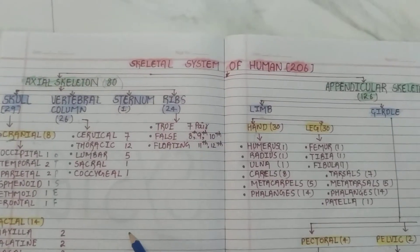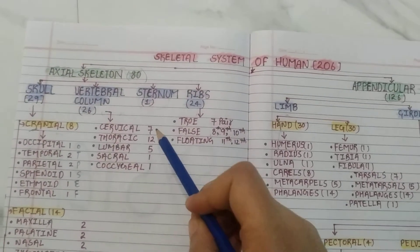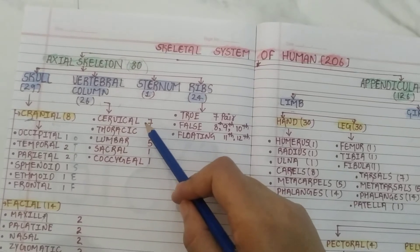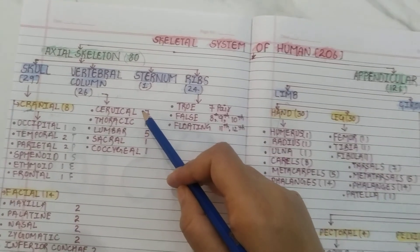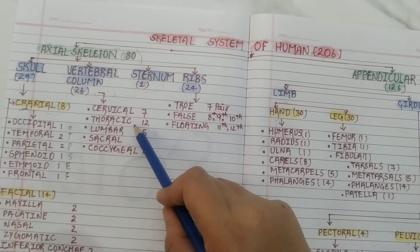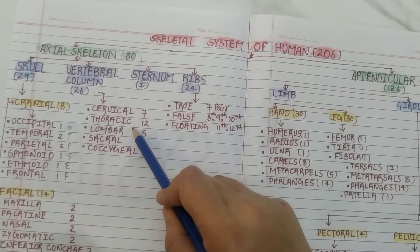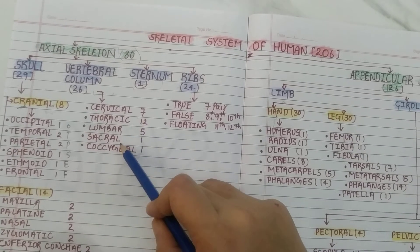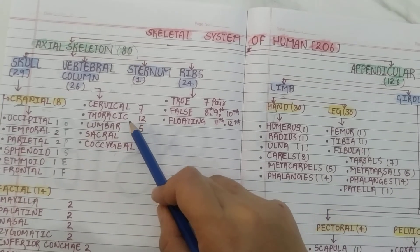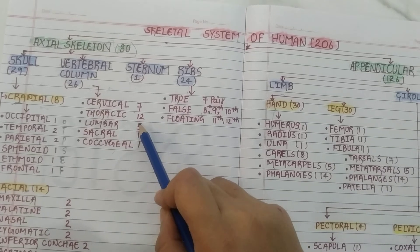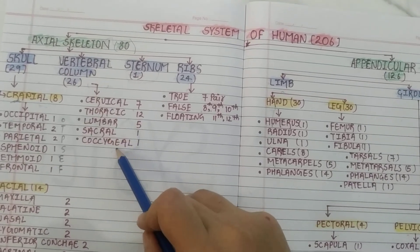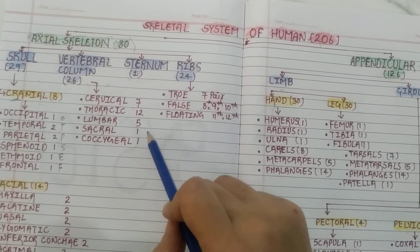Now the vertebral column has 26 bones. Originally there are 33 bones, but after the fusion of the sacrum and coccyx, there are 26 bones. The regions are: cervical (7), thoracic (12), lumbar (5), and the sacrum and coccyx together count as 1 each, giving the total of 26 bones.